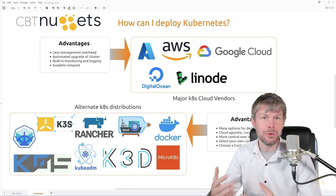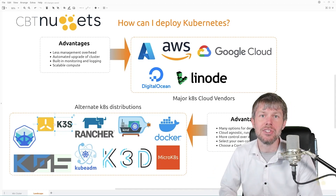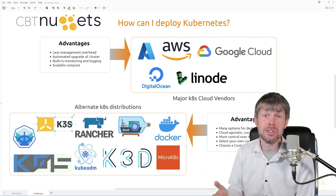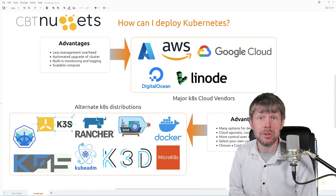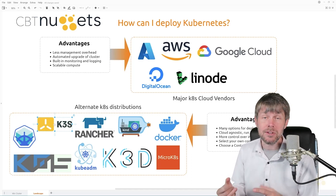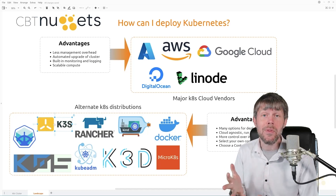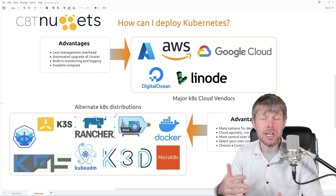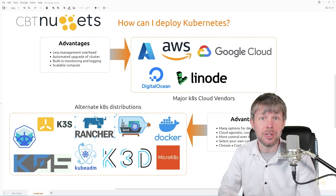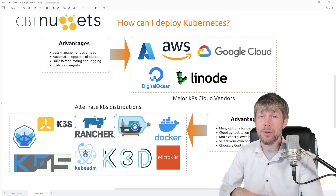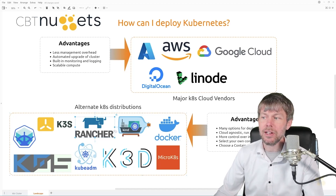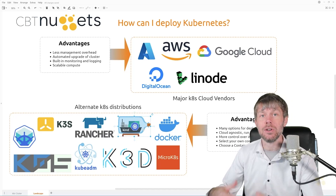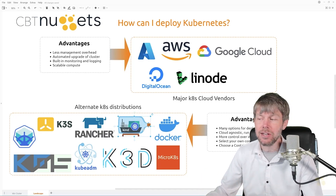K3s is actually really cool — it's a very lightweight distribution that comes packaged up as just a single binary. All you have to do is copy that binary to your system and you can immediately start calling the different commands inside of K3s and run kubectl commands to administer the cluster. You've also got options like Rancher, which you can think of as an orchestrator of orchestrators — it allows you to rapidly deploy Kubernetes clusters and has its own distribution of Kubernetes as well. Kind is known as Kubernetes in Docker, and if you'd like to run a Kubernetes cluster as an array of Docker containers, you can do that as well.